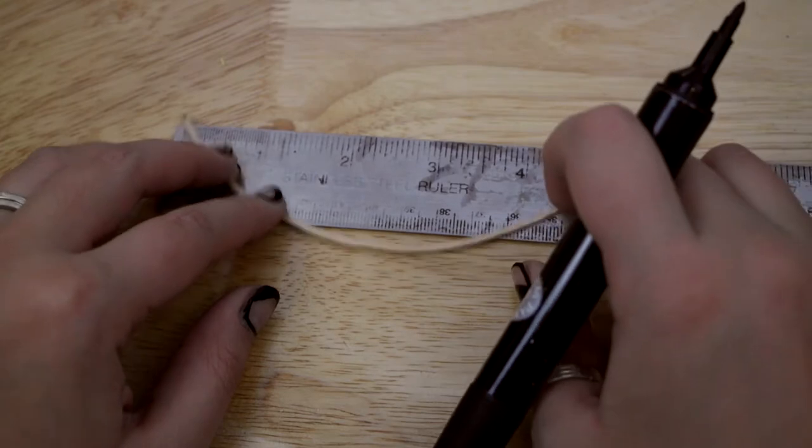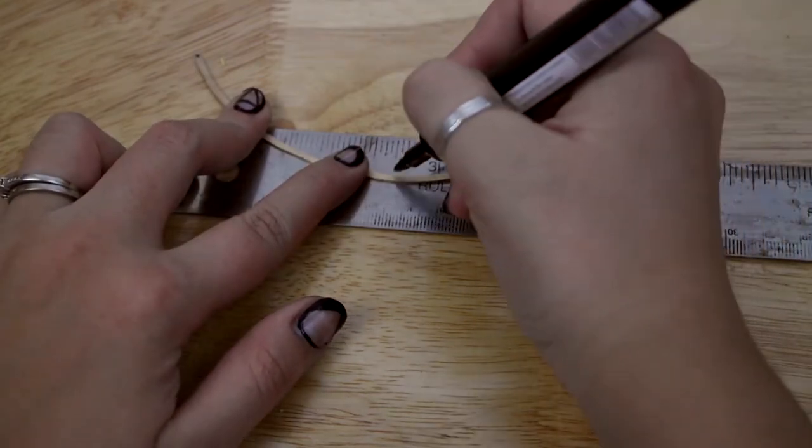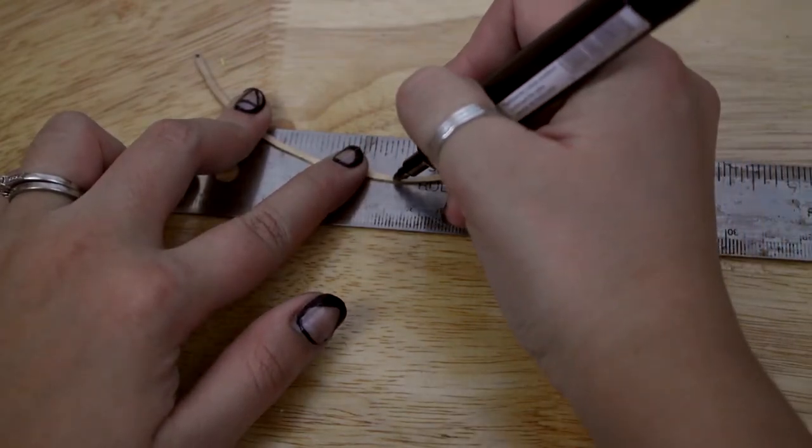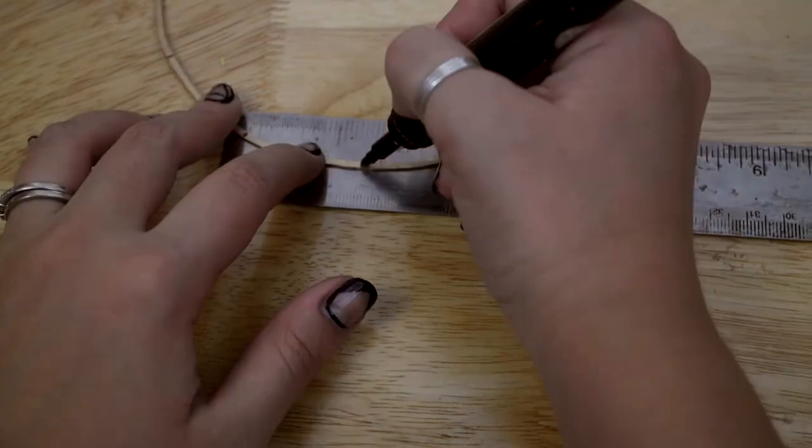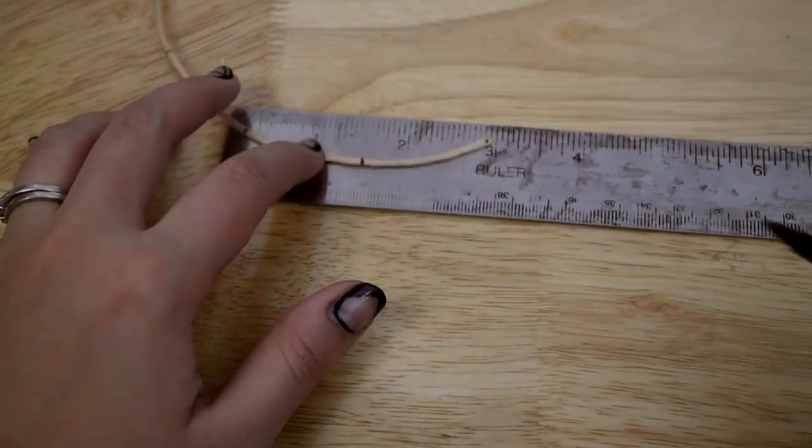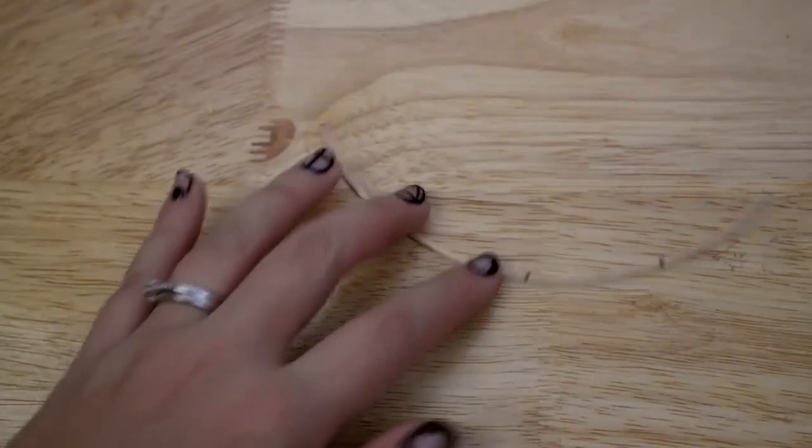Mark the spots where you're going to drill the holes. One on each end, one halfway, one a fourth of the way, and another three-fourths of the way. So there should be five marks in total, like so.